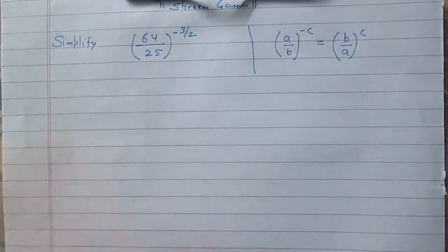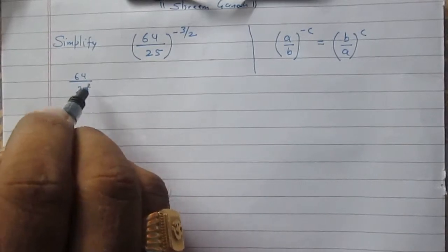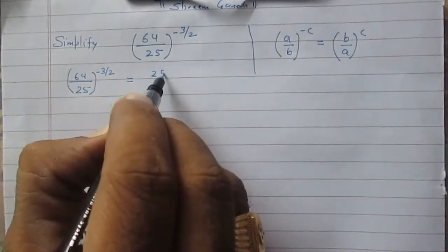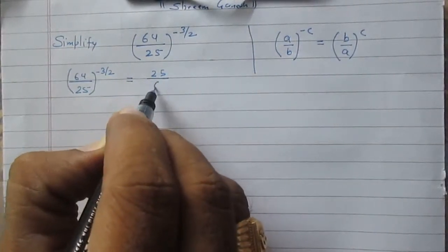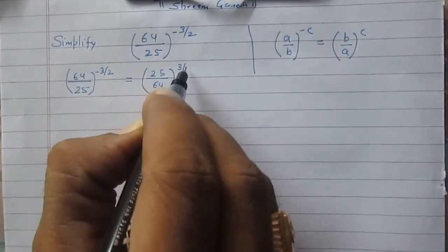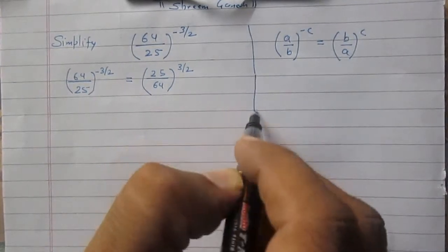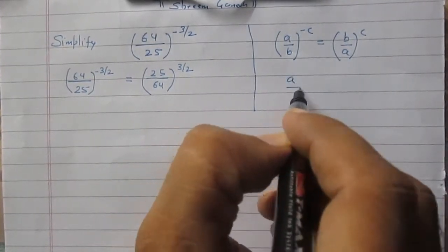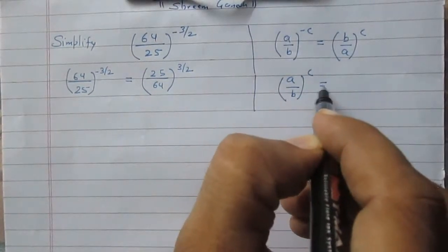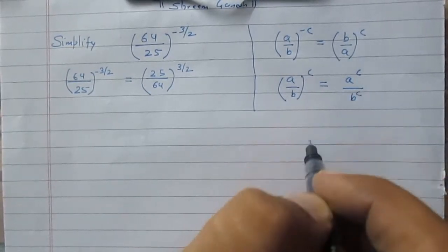Using this rule, 64 divided by 25 raised to the power minus 3 by 2 is equal to 25 divided by 64, raised to the power 3 by 2. Once again, according to the laws of exponents, a upon b raised to the power c can be written as a raised to the power c divided by b raised to the power c.